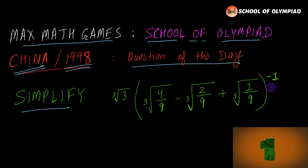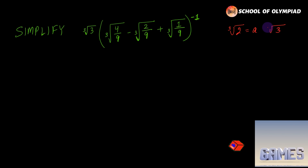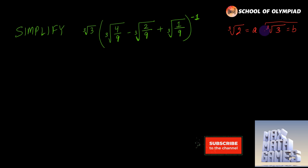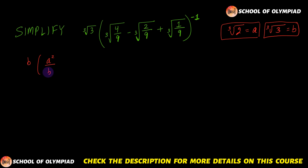All right, so now let us get started. We observe that two quantities are predominant in this expression. The first is cube root of 2 — let us take this equals to a. The second is cube root of 3 — let us take that equals to b. So our expression will now reduce to b into a²/b² minus a/b² plus 1/b², all raised to the power minus 1.